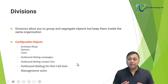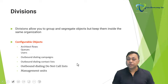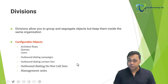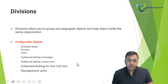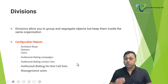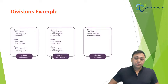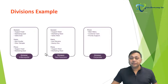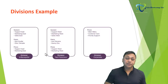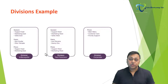After divisions are configured, maintaining them requires minimal effort. Associating queues to the correct division ensures that users with the role tied to that division have appropriate access to objects within those divisions. Configurable objects that can be assigned to a division include architect flows, users, and outbound campaign management units. For example, if a user belongs to a home division and tries to access an architect flow in a sales division, they may not have visibility into it.